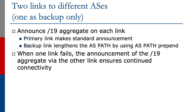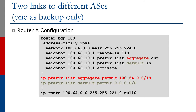Let's look at a configuration example. Looking at Router A, which is the connection to the primary upstream provider — we're announcing our aggregate. The prefix list 'aggregate out' will send the aggregate out to the upstream, and we accept the default route from them. That is all. It's a very simple configuration.